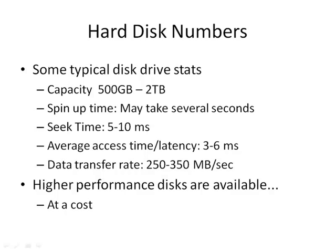Some typical hard disk drive stats: capacity ranges from 500 gigabytes to 2 terabytes for current devices. Spin-up time could take several seconds. Seek time is 5 to 10 milliseconds. Average access time and latency is 3 to 6 milliseconds. Data transfer rate is around 250 to 350 megabytes per second. Higher performance disks are available at a cost.